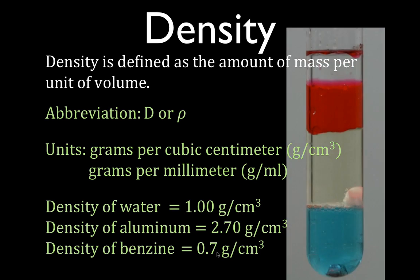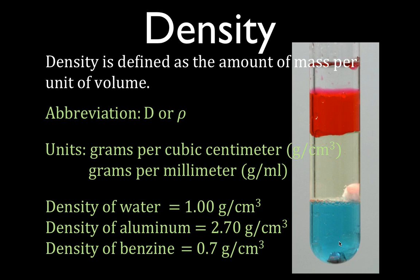Now we can use a test tube to demonstrate density. We can put some materials in the test tube and layer them to see their relative density. The piece of metal at the bottom has sunk to the bottom because it has the highest density. And the liquid at the top, which is an oil, has the lowest density. You can see the relative density from highest to lowest.